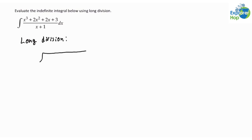Also, we can see that the degree of the numerator is greater than the degree of the denominator, which is also why we can perform long division. So let's set up the long division. The dividend is the numerator x cubed plus 2x squared plus 2x plus 3, and the divisor is x plus 1.